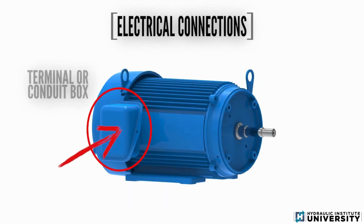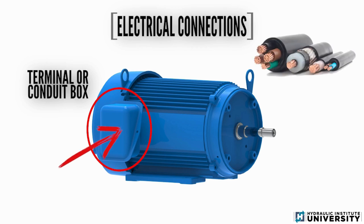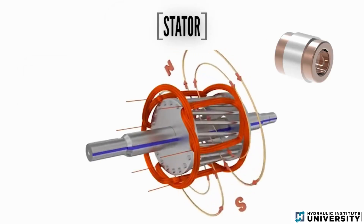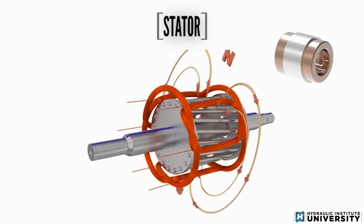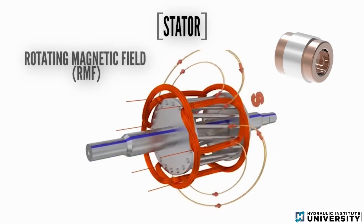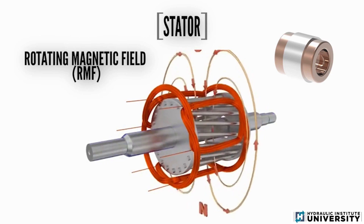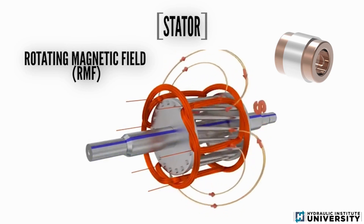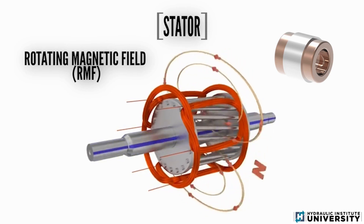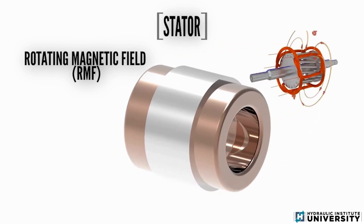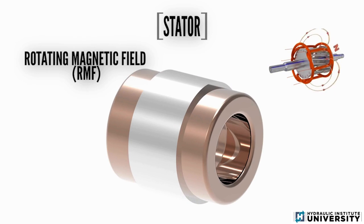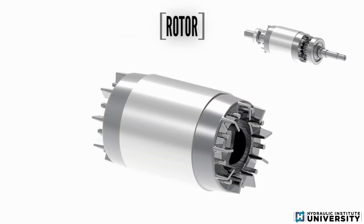Electrical connections to the windings are brought out to a terminal or conduit box — this is where the connection is made to an electrical power source. When current passes through the windings, it produces a rotating magnetic field that induces the rotation of the rotor. The stator's role is crucial as it provides the foundation for the motor's operation.